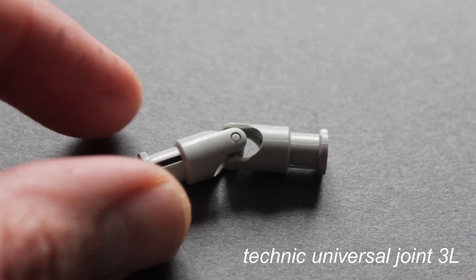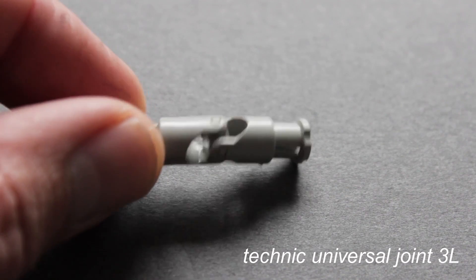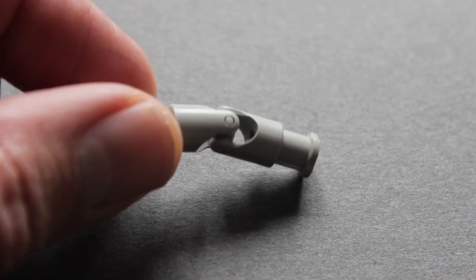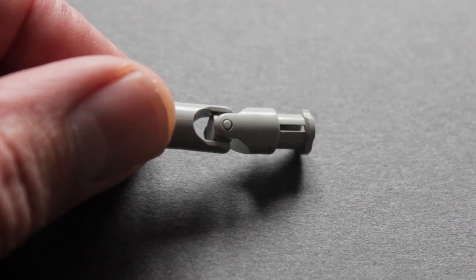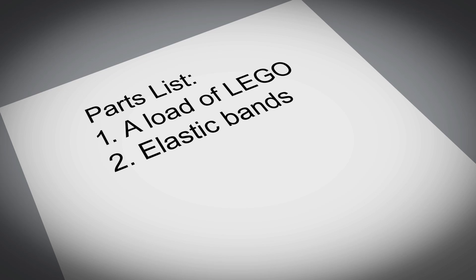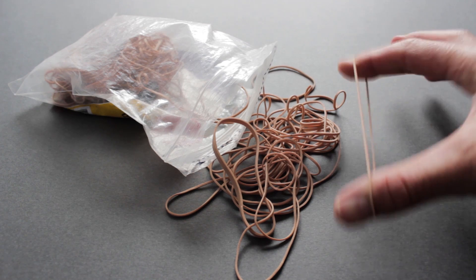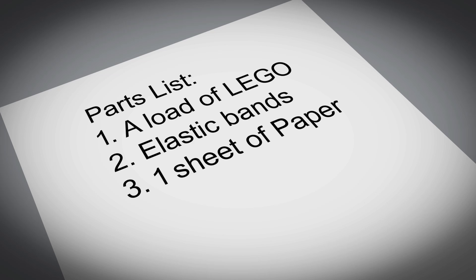To produce this design, you will need a load of LEGO. In particular, the Technic Universal Joint 3L from one of the car sets. If you don't have this, you can buy a few from eBay for a really cheap price. You also need thin elastic bands, a sheet of paper, and some tape.